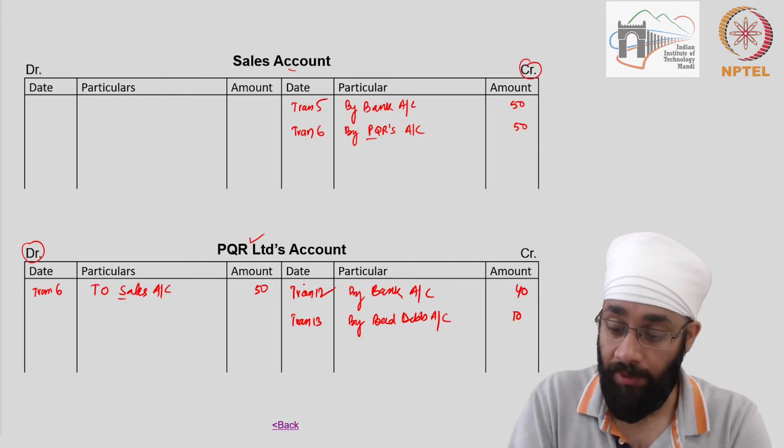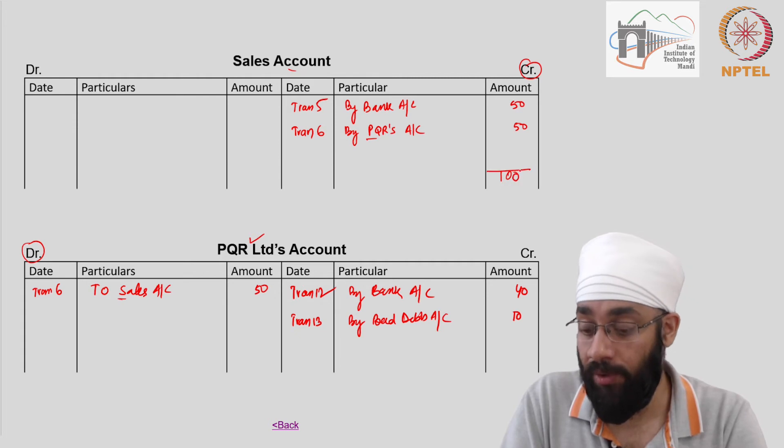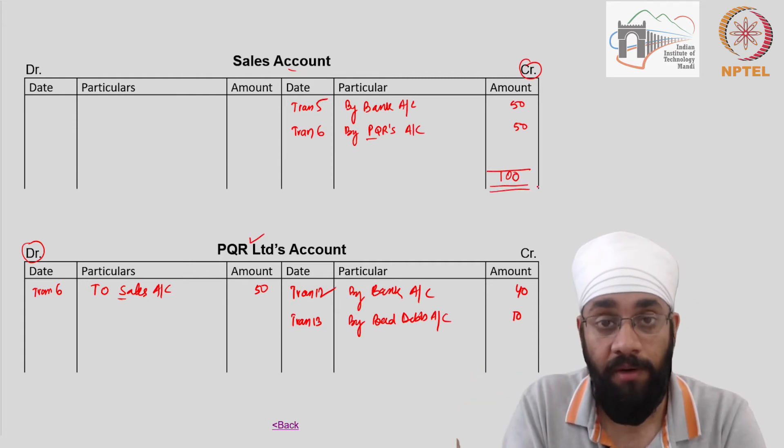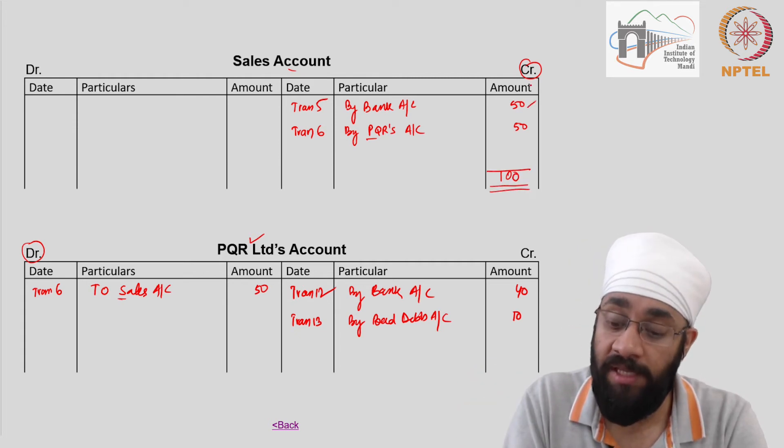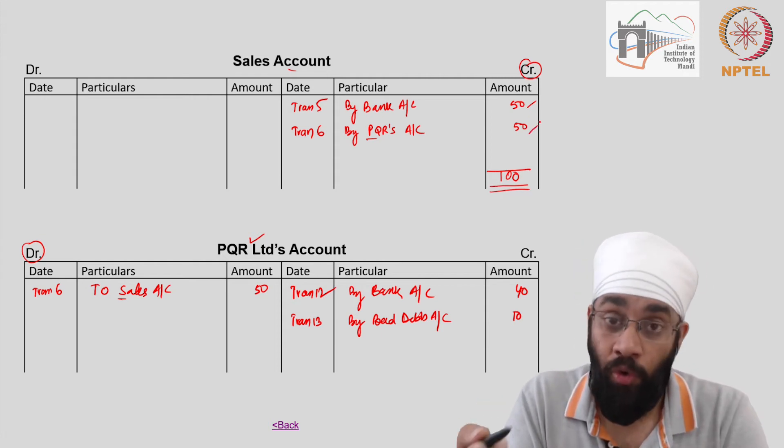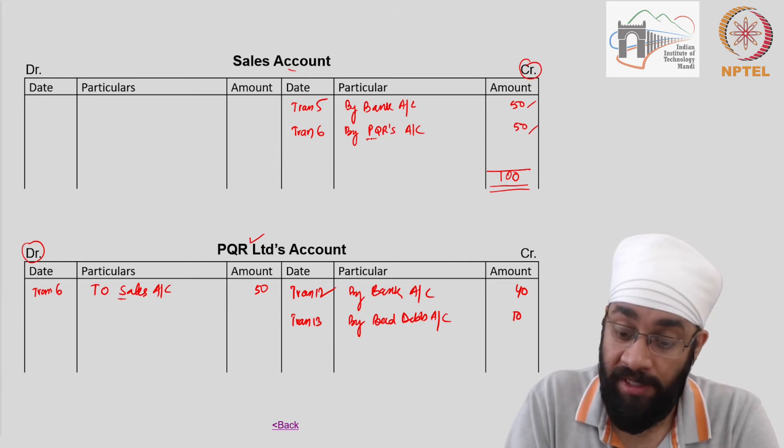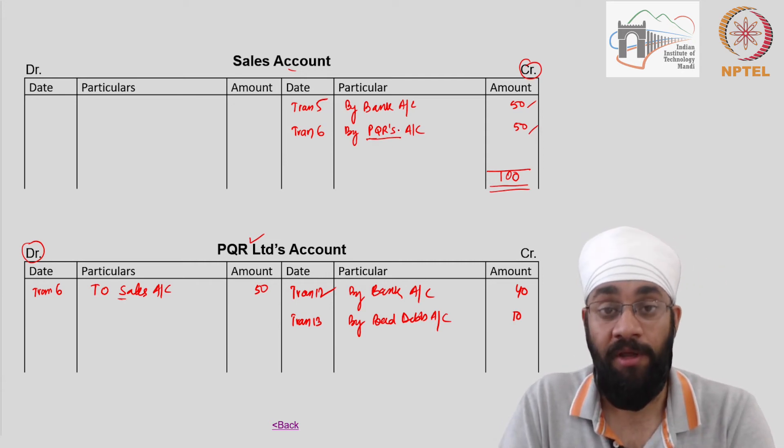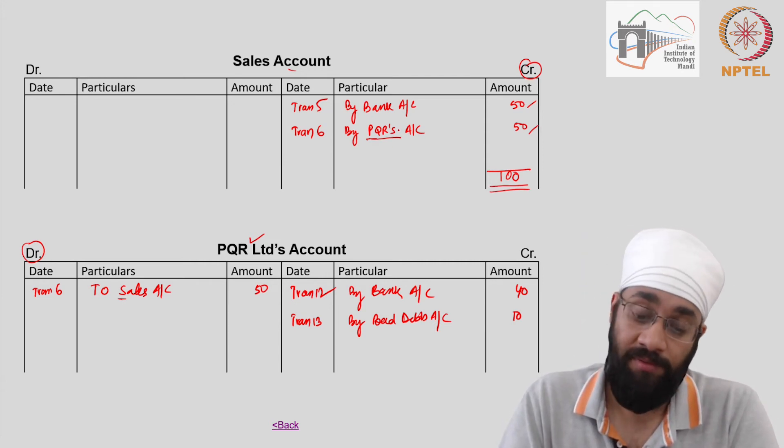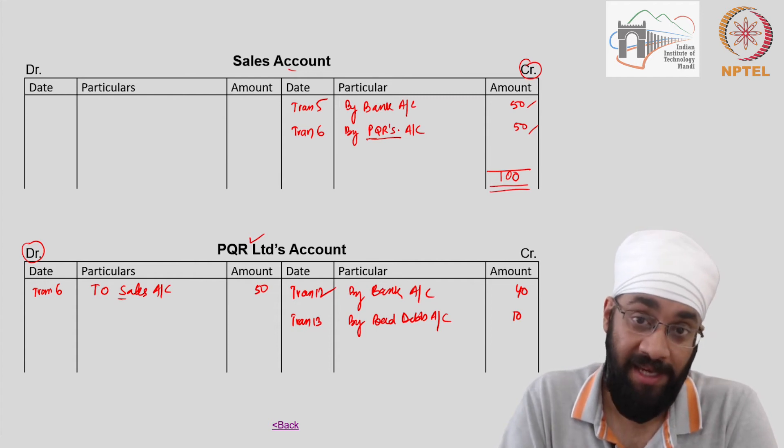Let us go to sales account - what is the total sales that you did during the year? 100. Half of the sales in cash and half of the sales on credit. Who did you sell to on credit? I sold to PQR limited on credit. So there you have it, all the sales in one place.